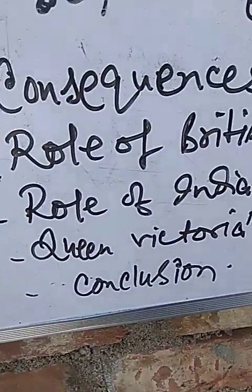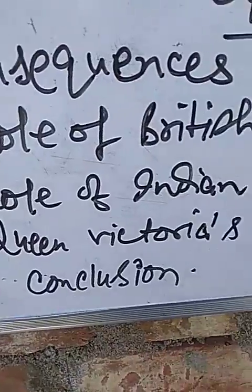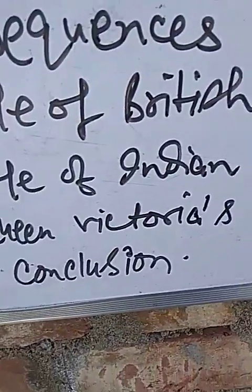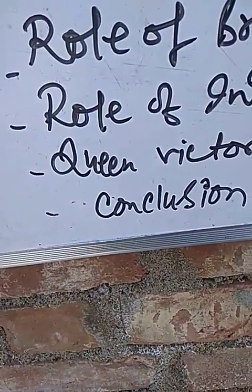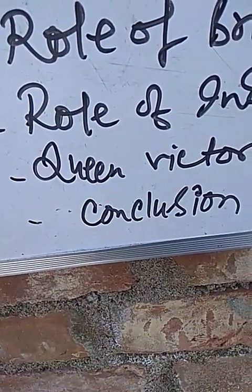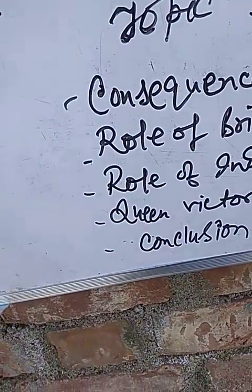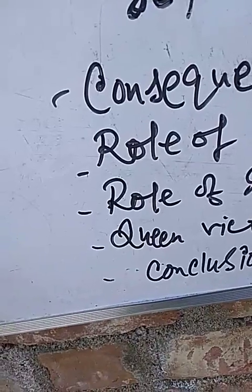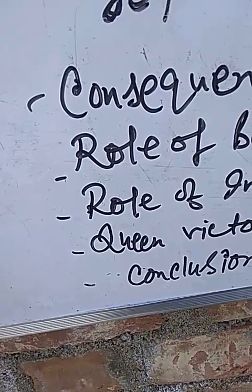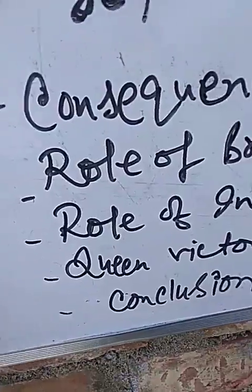The five points are: consequences, role of British Parliament, role of Indian people, Queen Victoria's proclamation, and finally conclusion. These are the following points and now I am going to explain them.